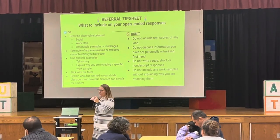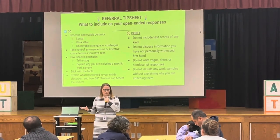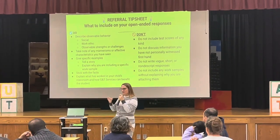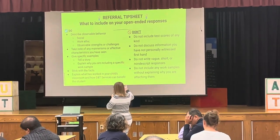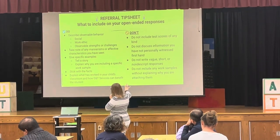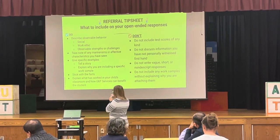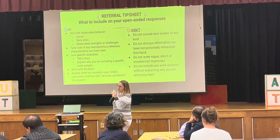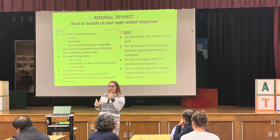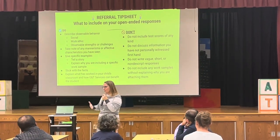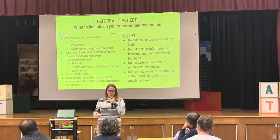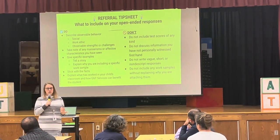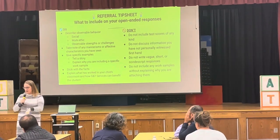Note observable strengths or challenges — it's okay to attach mistakes. We're not looking for perfection; these are kids. Take note of any mannerisms or affective characteristics you've seen. Give specific examples — tell us a story. Explain why you're including specific work samples. Stick with facts. We're not adding flowery language. When you're representing your child and giving us the picture of who this child is, make sure it's something observable, just a fact.